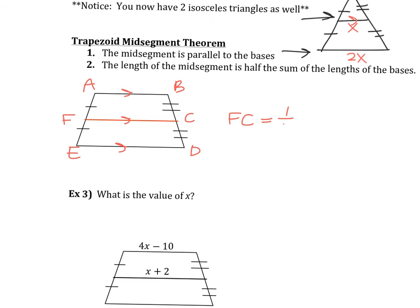So what happens is we would say that middle segment, FC, is half. How do you find an average? You add what you have and divide by how many you have. So we're going to add AB and ED and cut it in half, divide by two. That will get you the middle segment, your mid-segment.